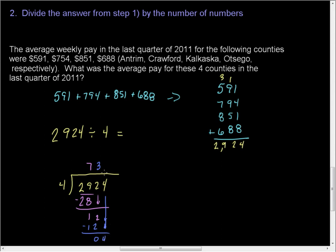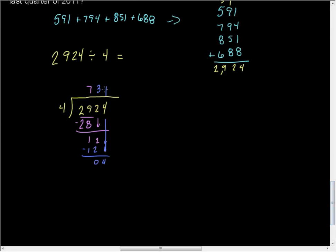Keep bringing it down. 4. 4 goes into 4 once. 1 times 4. 1 times 4 is 4. Subtract for 0. So we have a remainder of 0, so it's a nice even number.